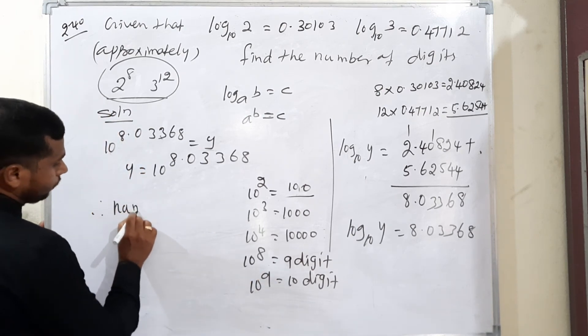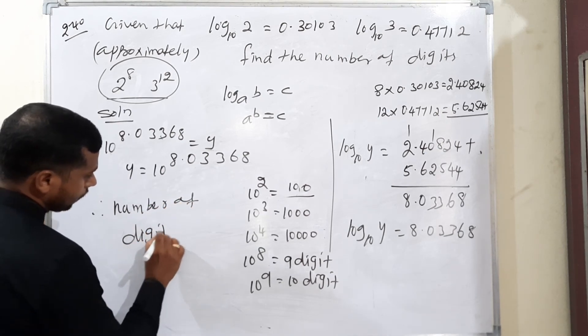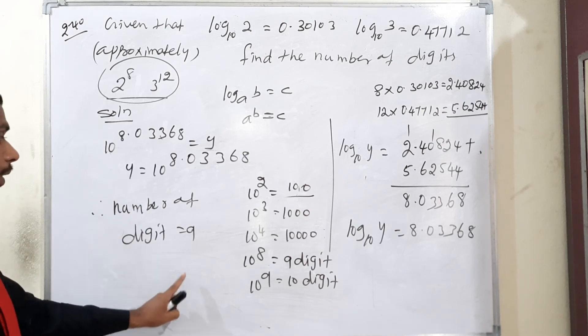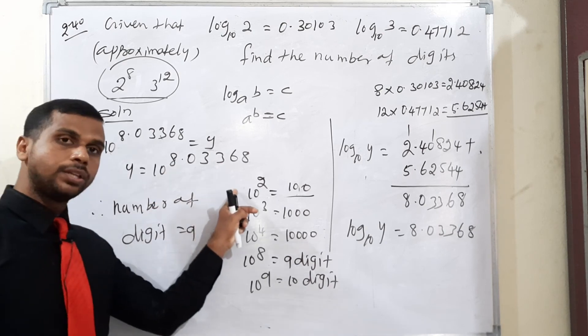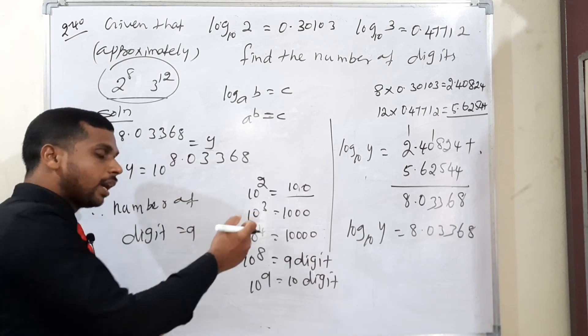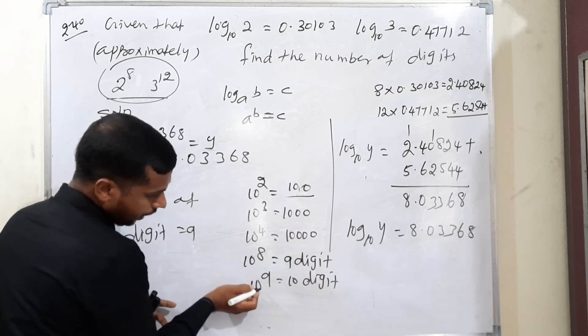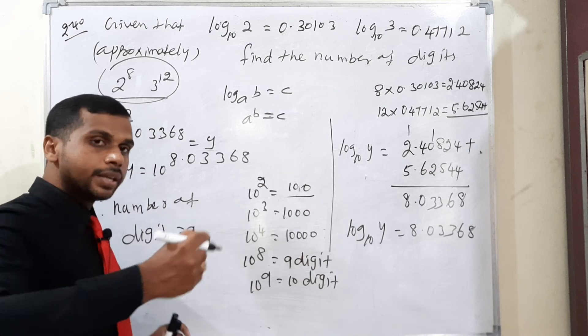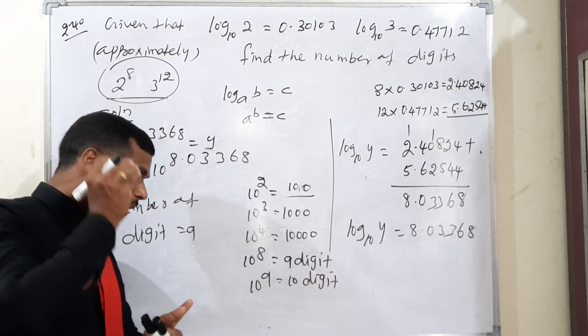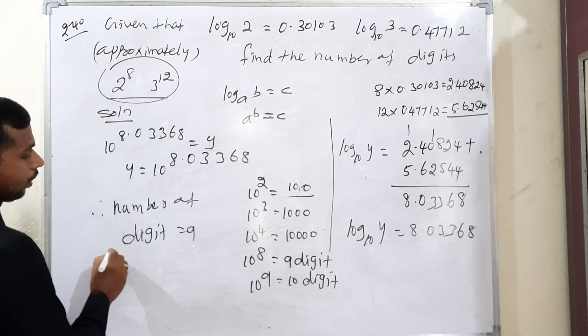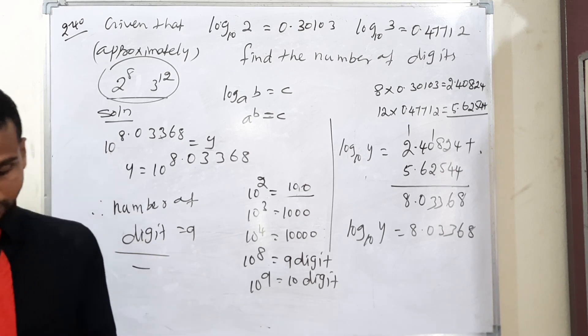The total number of digits is 9. Power 8 to power 9, in between like 8.99 something, is the 9 digit area. When power reaches 9, 10 digits start. So the number of digits is equal to 9.